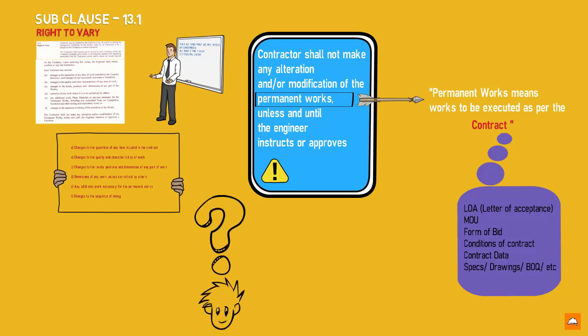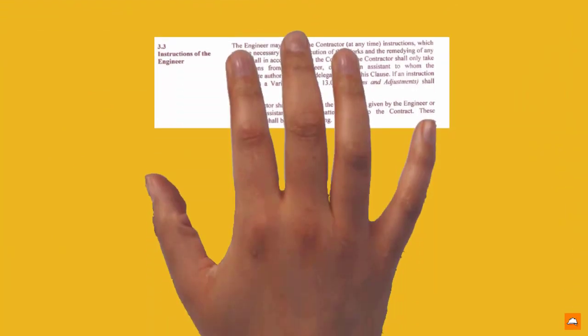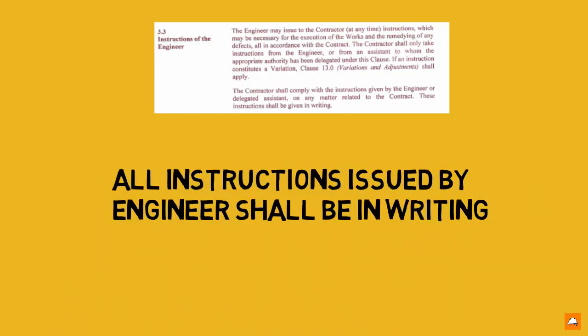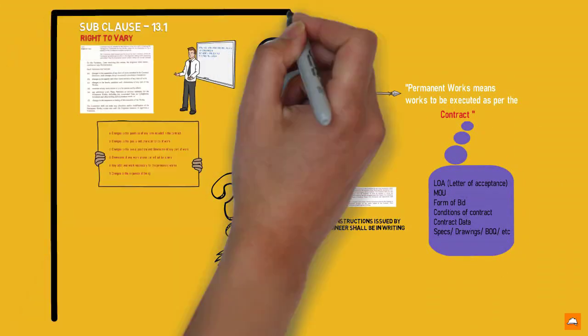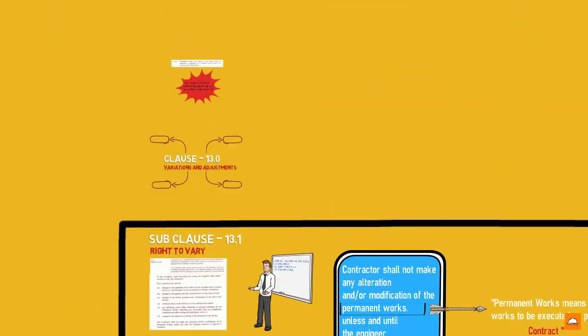But one more question, this clause does not provide how does engineer issue his instructions. That is included in subclause 3.3. It states that all instructions issued by engineer shall be in writing. Now we know a basic idea of clause 13.0 and few other clauses that associate with clause 13.0.